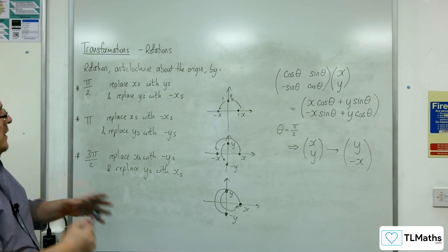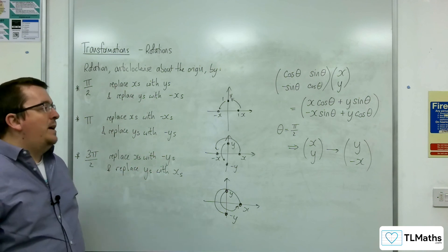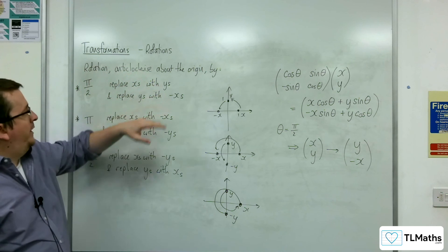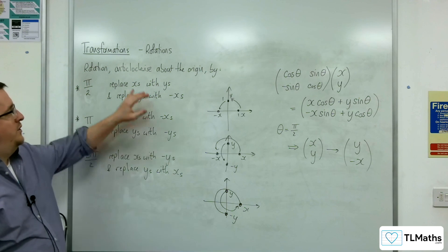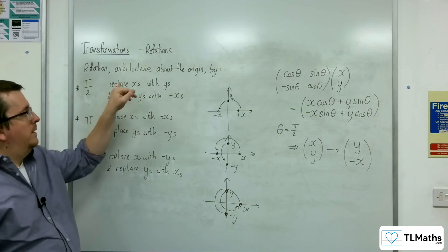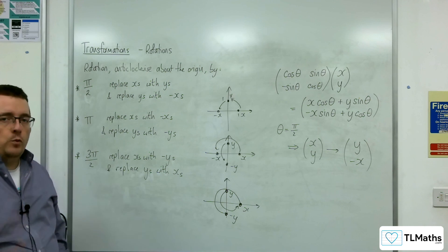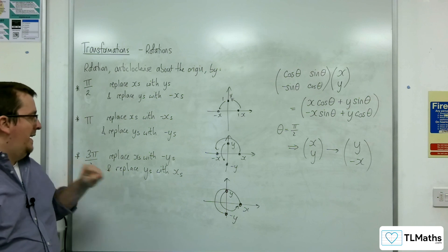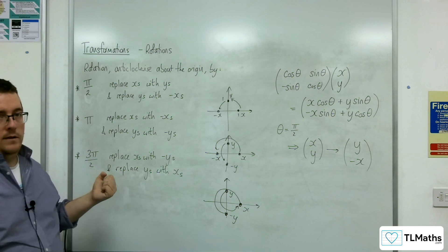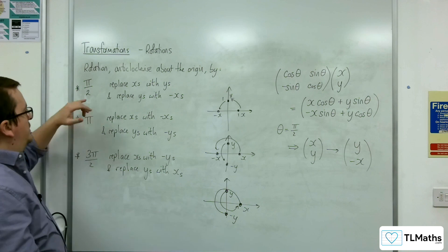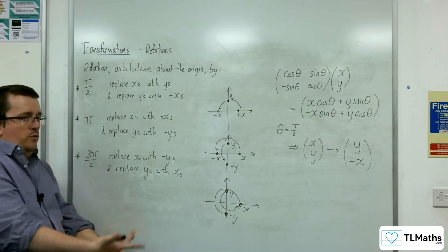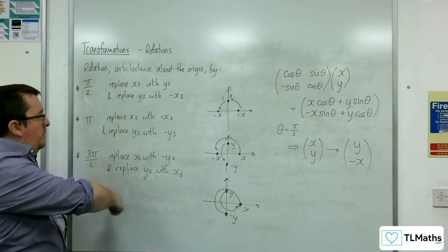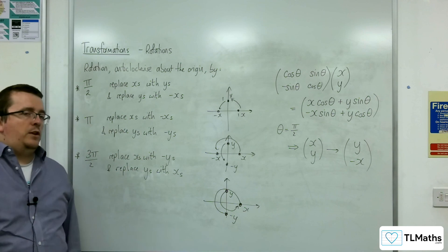And so if we follow these rules, that will enable us to rotate graphs around by pi over 2, pi, and 3 pi over 2, anticlockwise about the origin. Just so you're clear, this is the general way of considering your rotations of graphs. Obviously, if the question said rotation by 90 degrees clockwise, that's the same as a rotation anticlockwise by 270. Or rotation clockwise by pi over 2 is the same as a rotation anticlockwise by 3 pi over 2. So you could just do it that way around. But these are the three types that you need to be able to deal with.